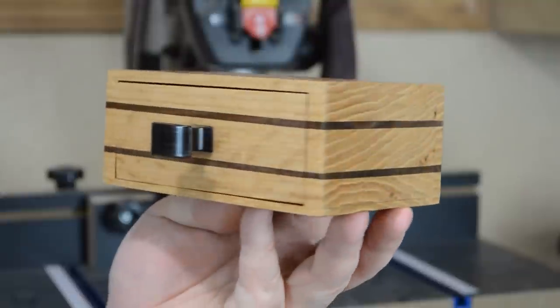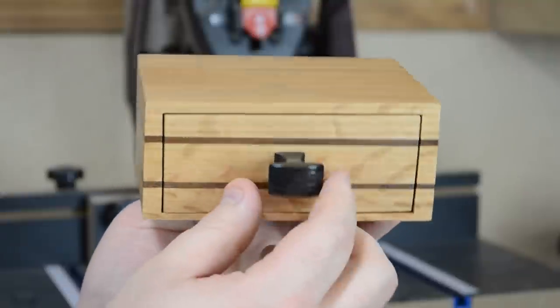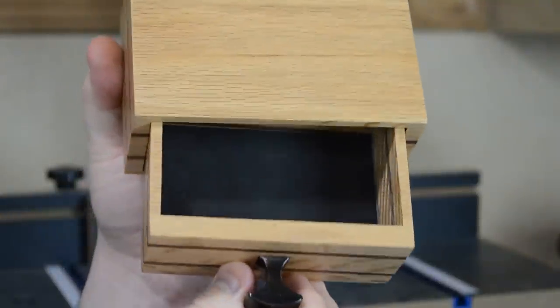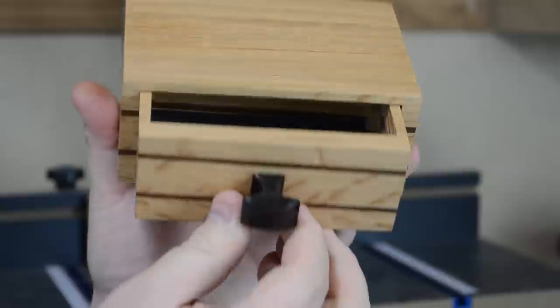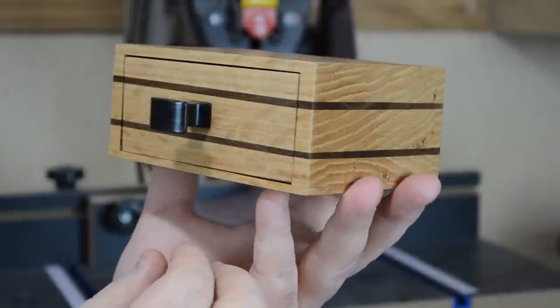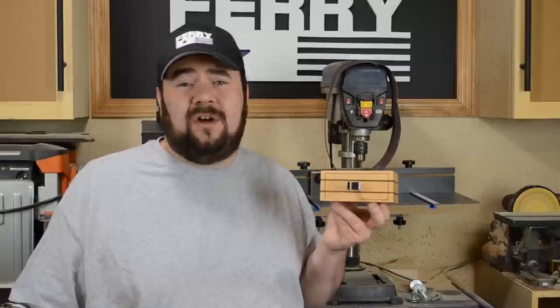There you go. A bandsaw box that I don't know if I'd even necessarily call a bandsaw box with how many changes I had to make to it, but sometimes you have to adapt to things like blades breaking. I still think it turned out pretty nice and it's actually a gift for my five-year-old son and I think he's going to enjoy it. It's going to be kind of a keepsake box for, well, whatever keepsakes a five-year-old has.